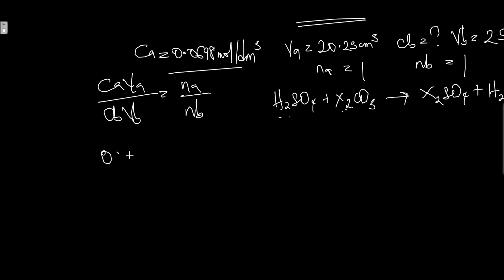When you substitute into the equation, we have CA 0.0698 mol/dm³ times the volume 20.25 cm³ over CB, what we're looking for, times the size of pipette 25, equals 1 over 1. When you make CB the subject of formula,